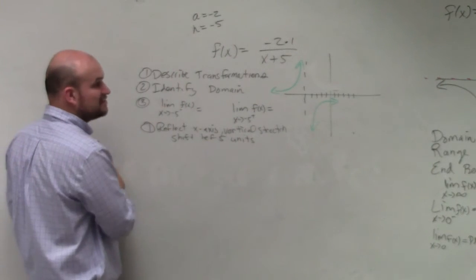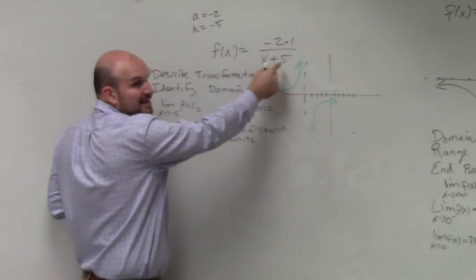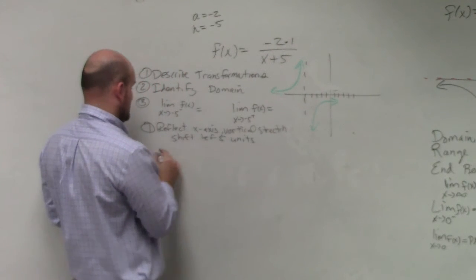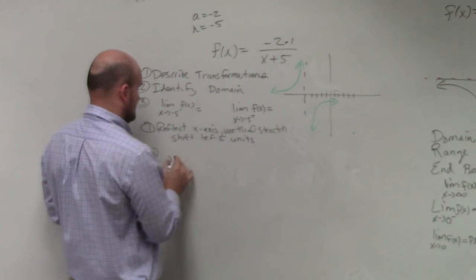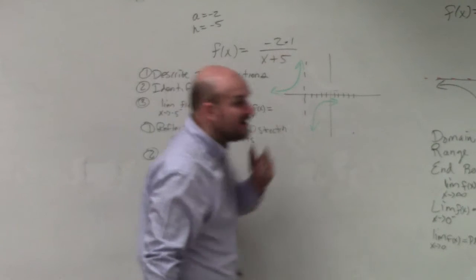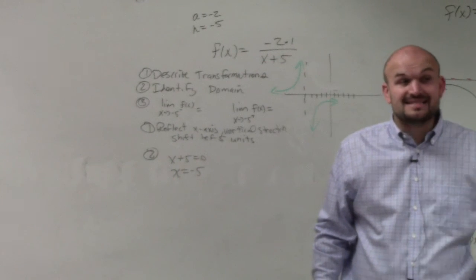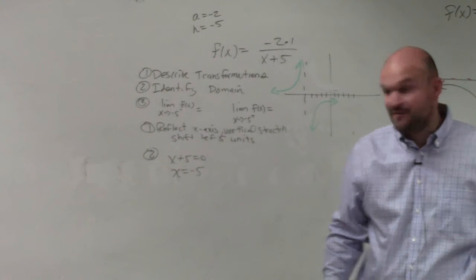We need to identify the domain. Well, the domain is for all values. Remember, we cannot make our denominator equal to 0. So the first thing we do is set our denominator equal to 0, and we get x = -5. That means all numbers are inside the domain except for -5.